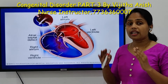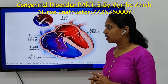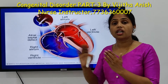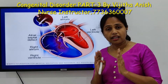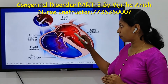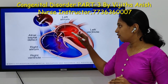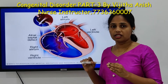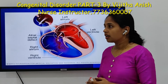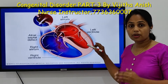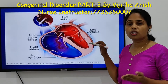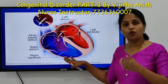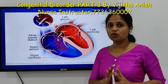In ASD, shunting occurs through the opening. Shunting usually takes place from left to right because the left heart pressure is slightly higher. In adult circulation, once the baby is out from the womb, the left side of the heart is considered as having higher pressure because systemic circulation always starts from the left ventricle. Left heart pressure is higher than right, so fluid moves from higher pressure to lower pressure.